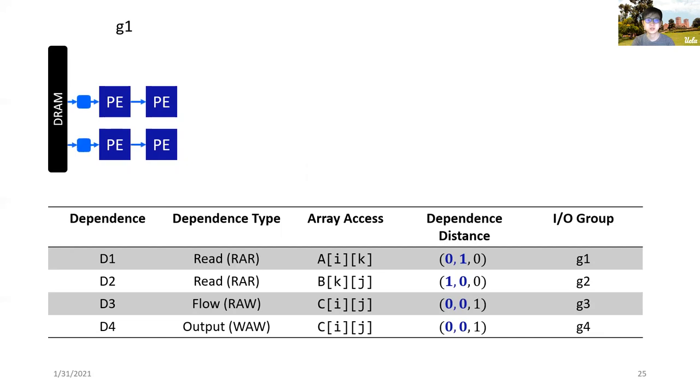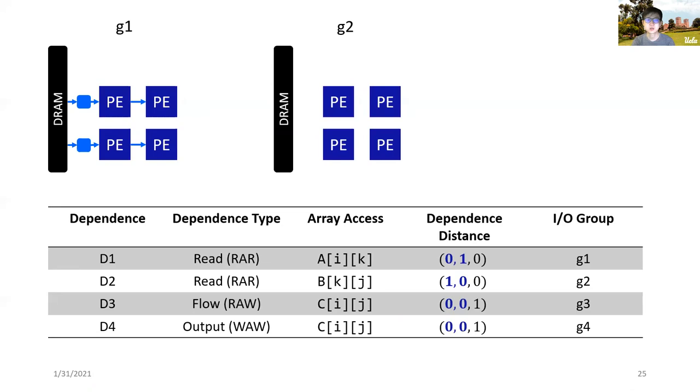Accordingly, we will allocate local interconnects between PEs to transfer data through horizontal interconnects. For the second I/O group, G2, the data dependence distance is 1,0. Accordingly, we generate I/O modules to transfer data vertically. As for the third group, G3, the dependence vector is 0,0, which indicates data are accumulated locally inside PEs. There is no need to generate any I/O modules.